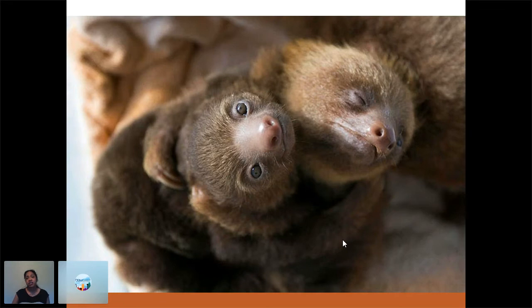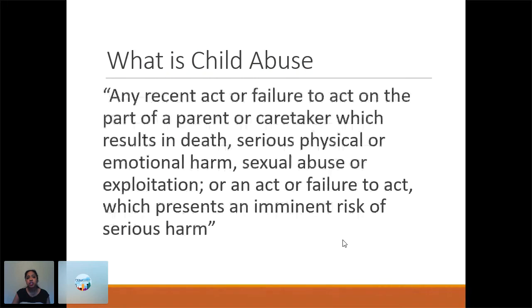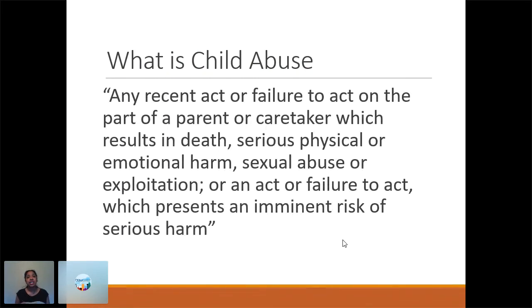We're going to talk about the different kinds of child abuse and how to recognize them. The federal definition of child abuse is: any recent act or failure to act on the part of a parent or caretaker which results in death, serious physical or emotional harm, sexual abuse or exploitation, or an act or failure to act which presents an imminent risk of serious harm. Notice: harm actually happened or a serious risk of imminent harm. So you don't have to have an injury before it can be determined child abuse. For example, allowing a two-year-old to wander the street, even if the child wasn't injured, the risk was so high that it's still considered neglect.